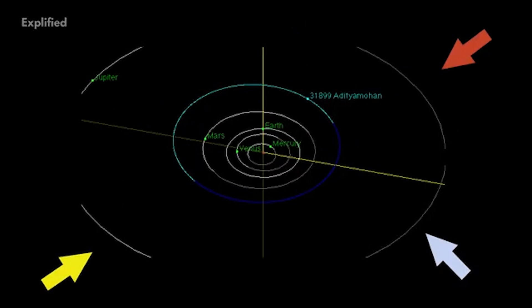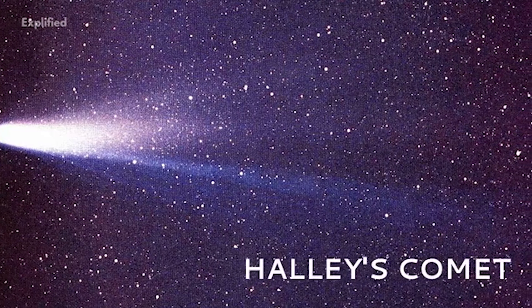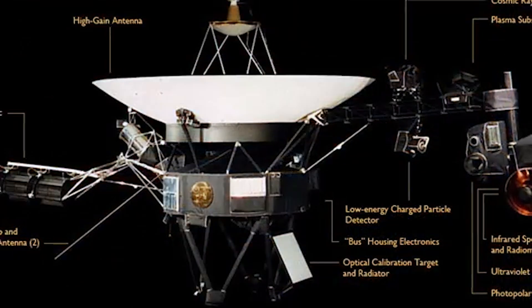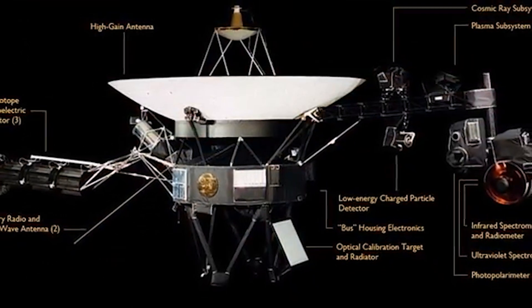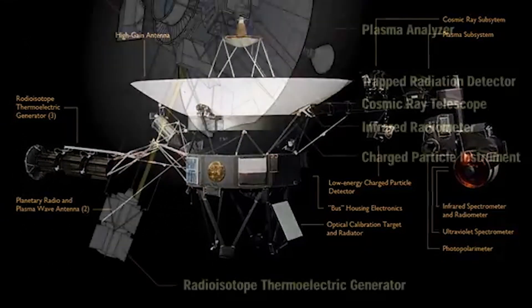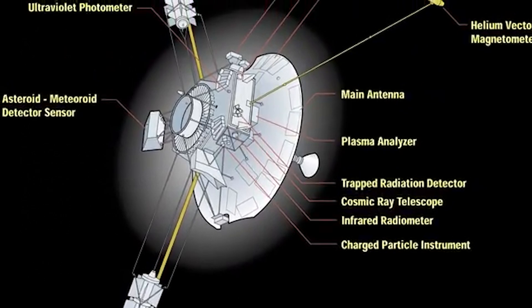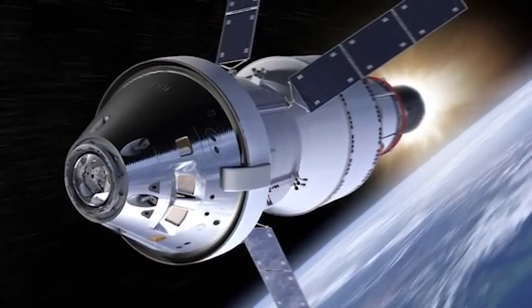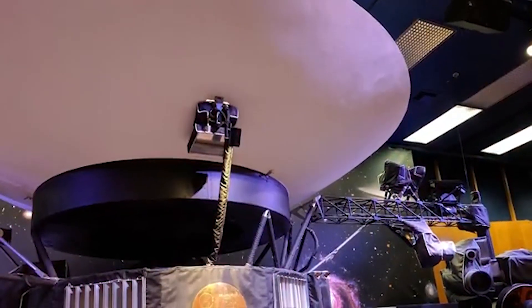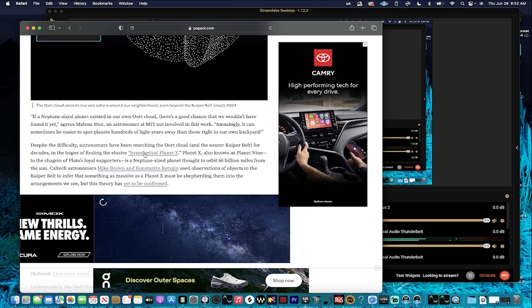If a Neptune size planet existed in the Oort cloud, there's a good chance that we wouldn't have found it yet. Astronomers at MIT not involved in this work: amazingly it can sometimes be easier to spot planets hundreds of light years away than those in our own backyard. I just said that. I guess when you're looking for other planets and you're doing this thing called solar eclipses and you're looking for certain light bending, when you don't have any light bending and light interacting with any other planets in the outside of your solar system, I guess I could somewhat understand. But at the same time, up your telescopes.